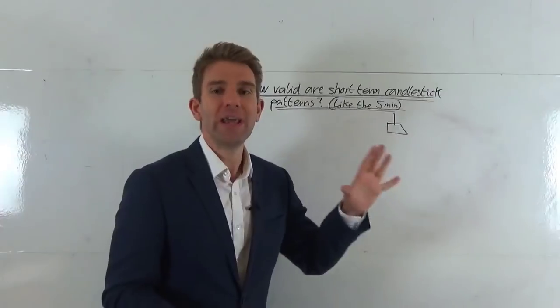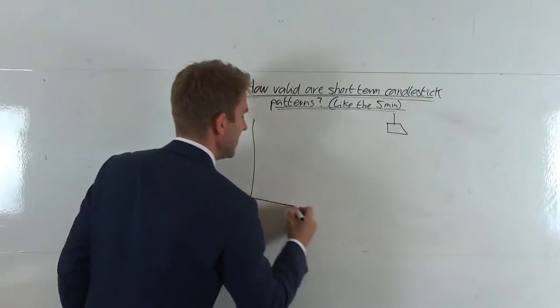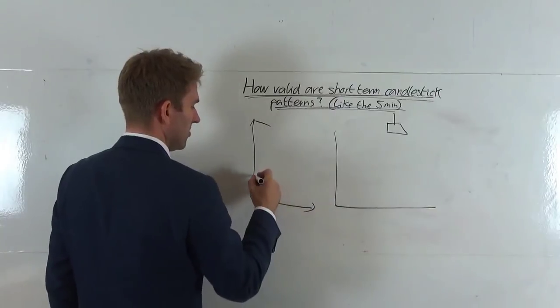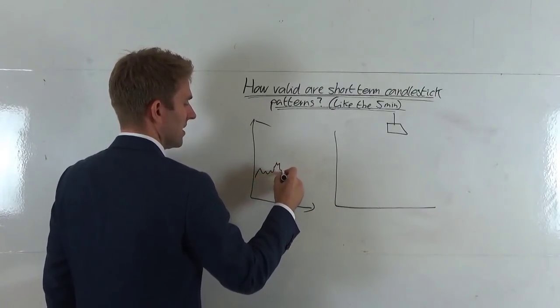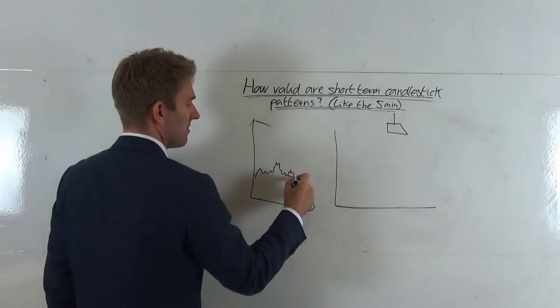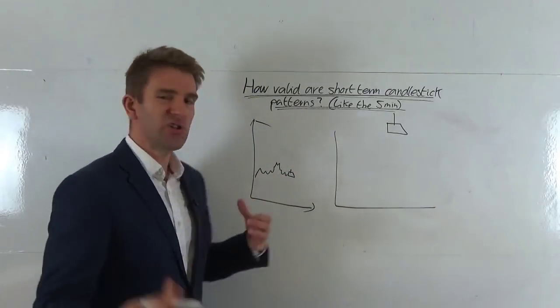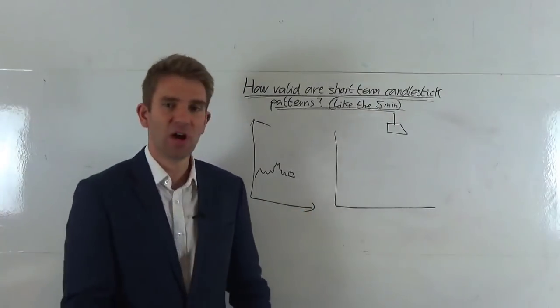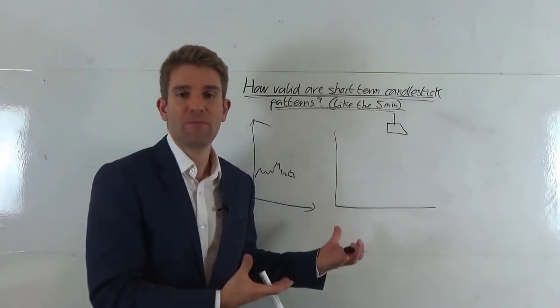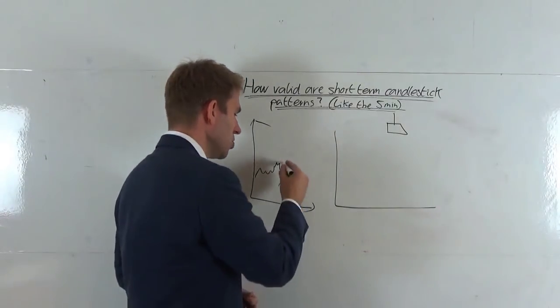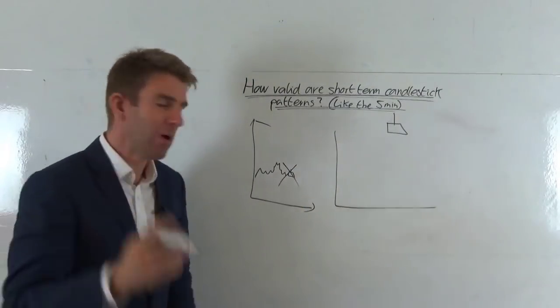If we see it—let's use two different charts—we've been chugging along doing this, and then we see our shooting star here. We've got no volume, really, we've got a really tight range, nothing much is happening, we get a shooting star. How valid is that on a five-minute timeframe? Pretty invalid. That's worthless. There's no point even getting excited by it.